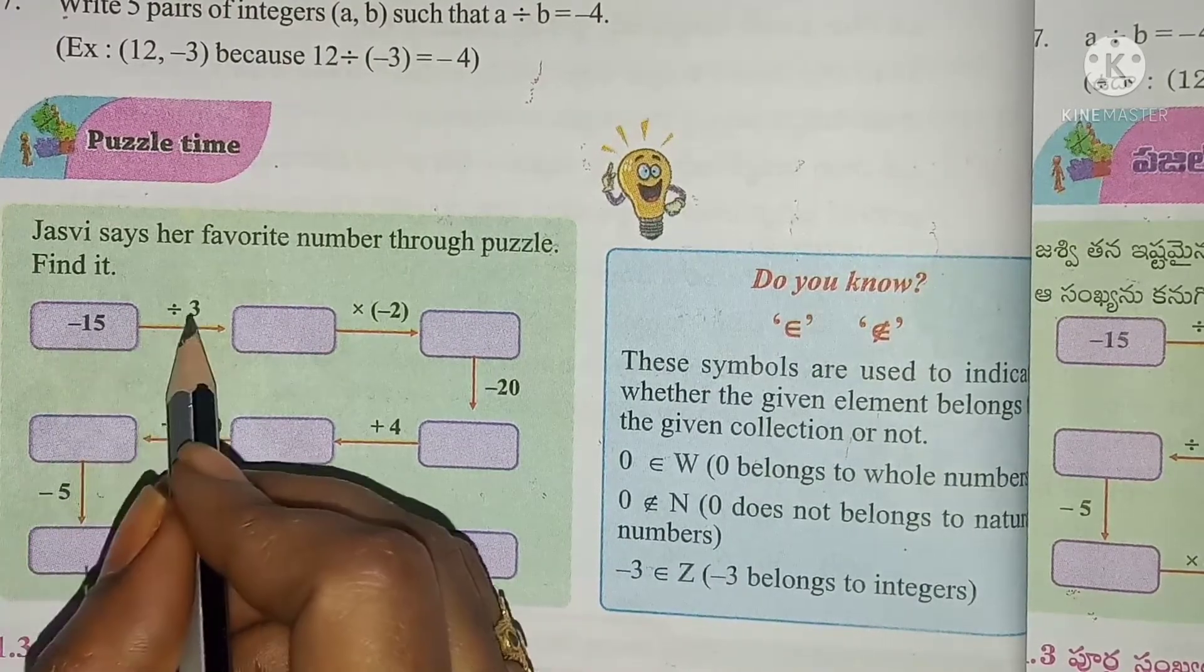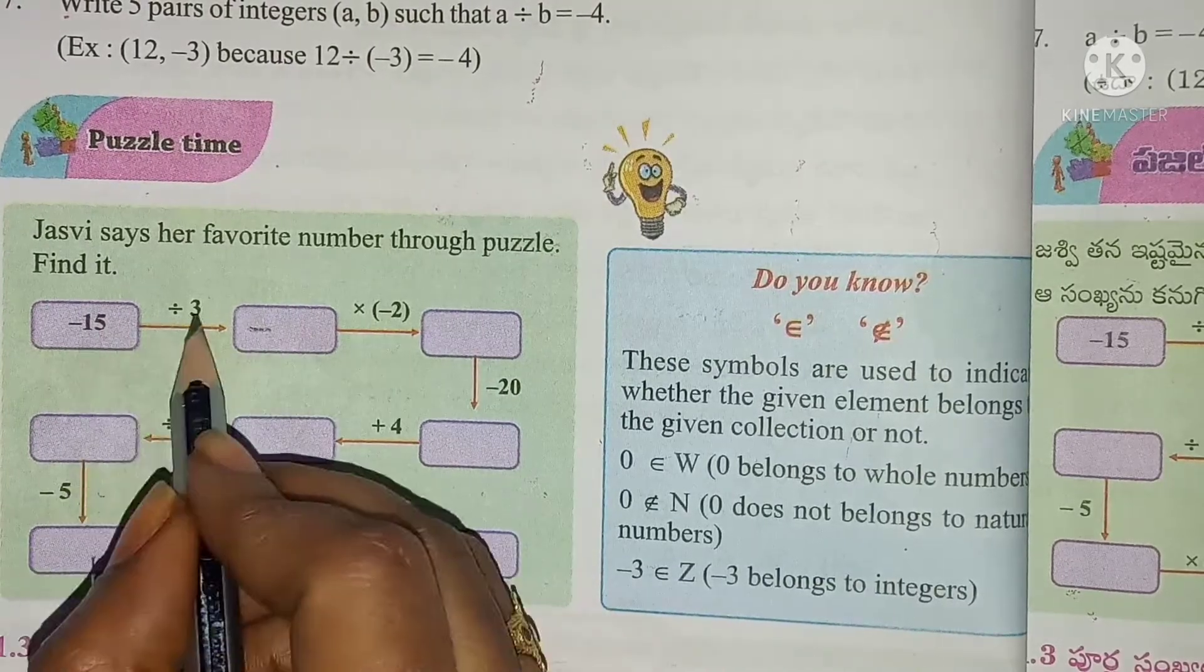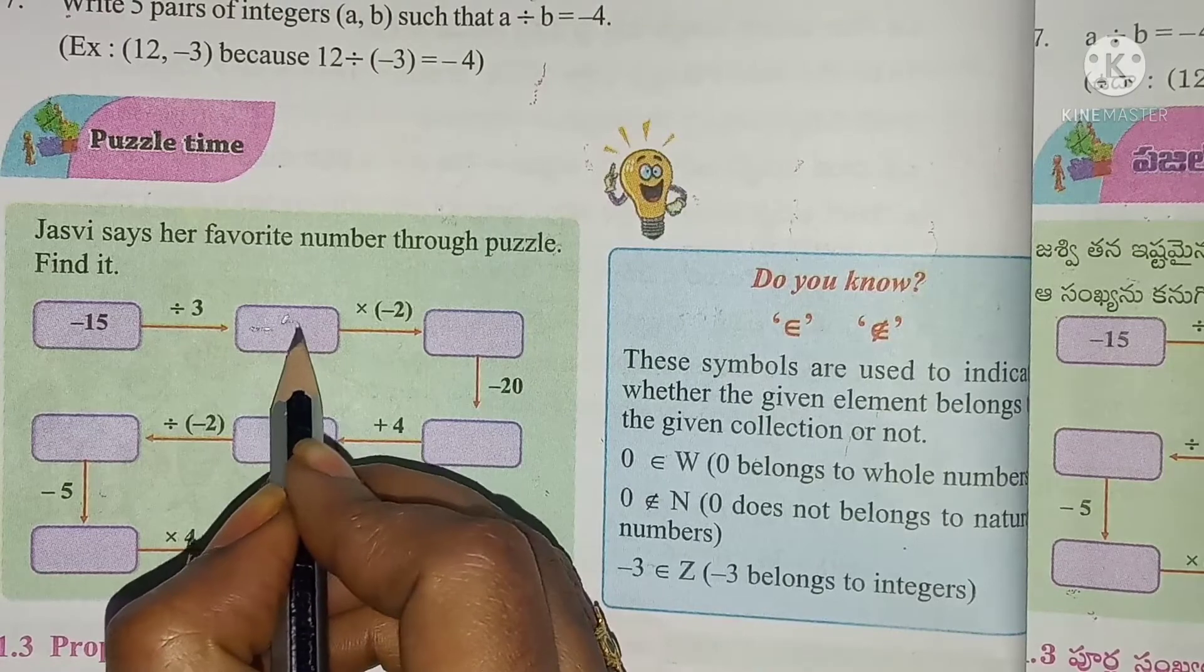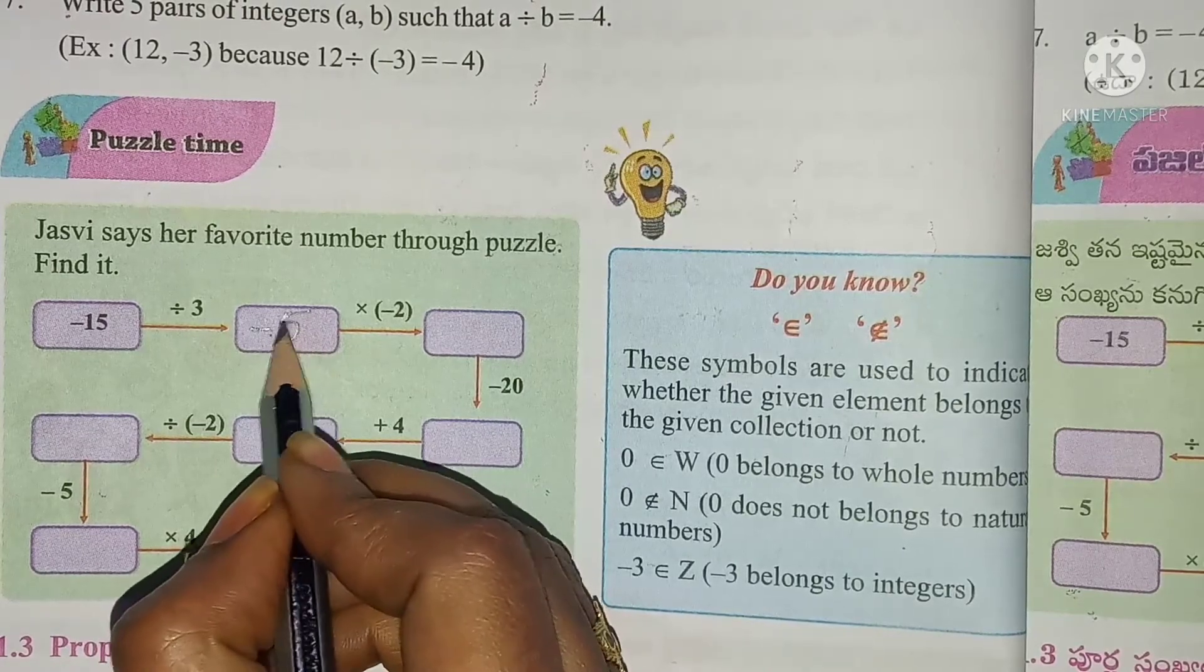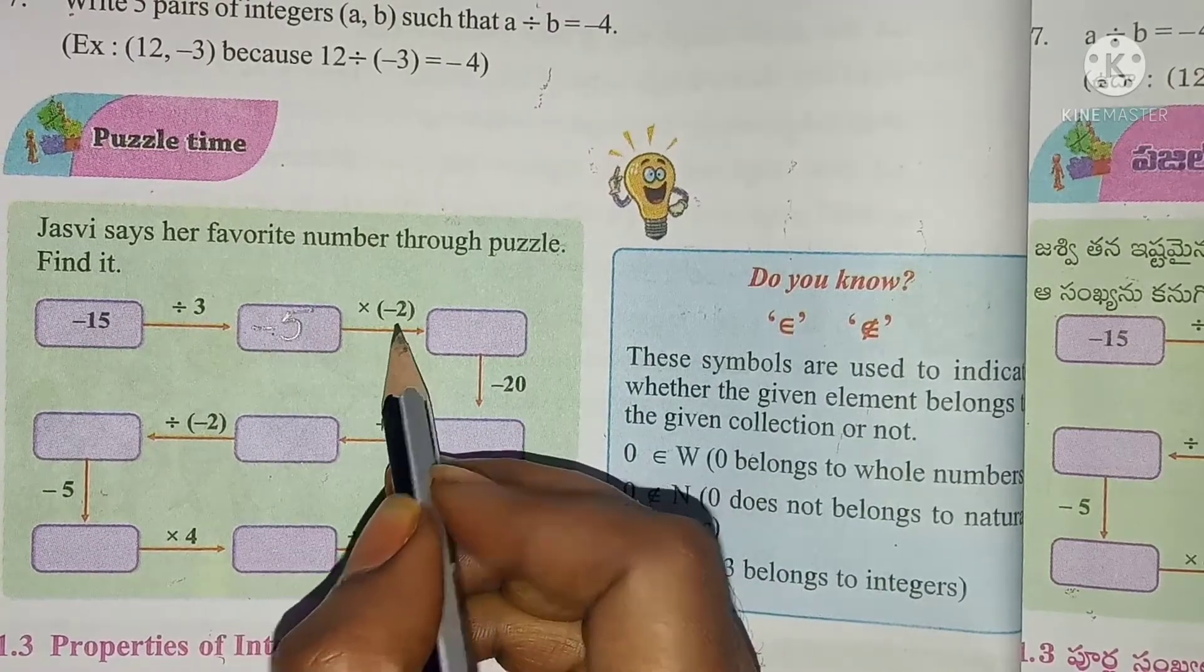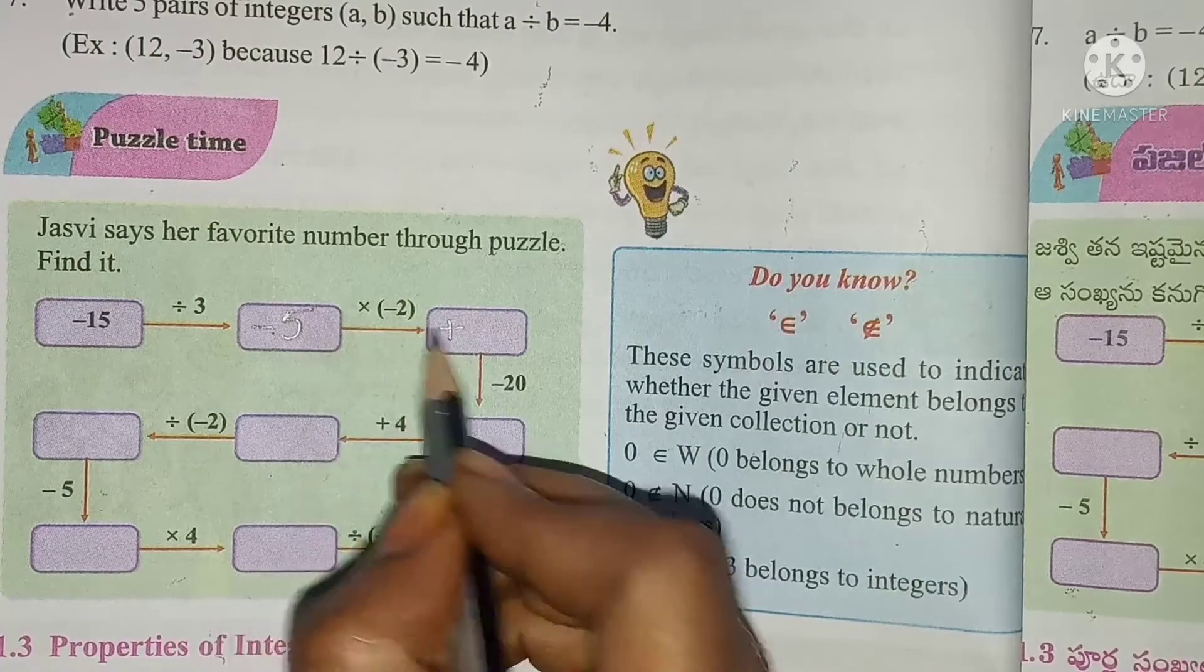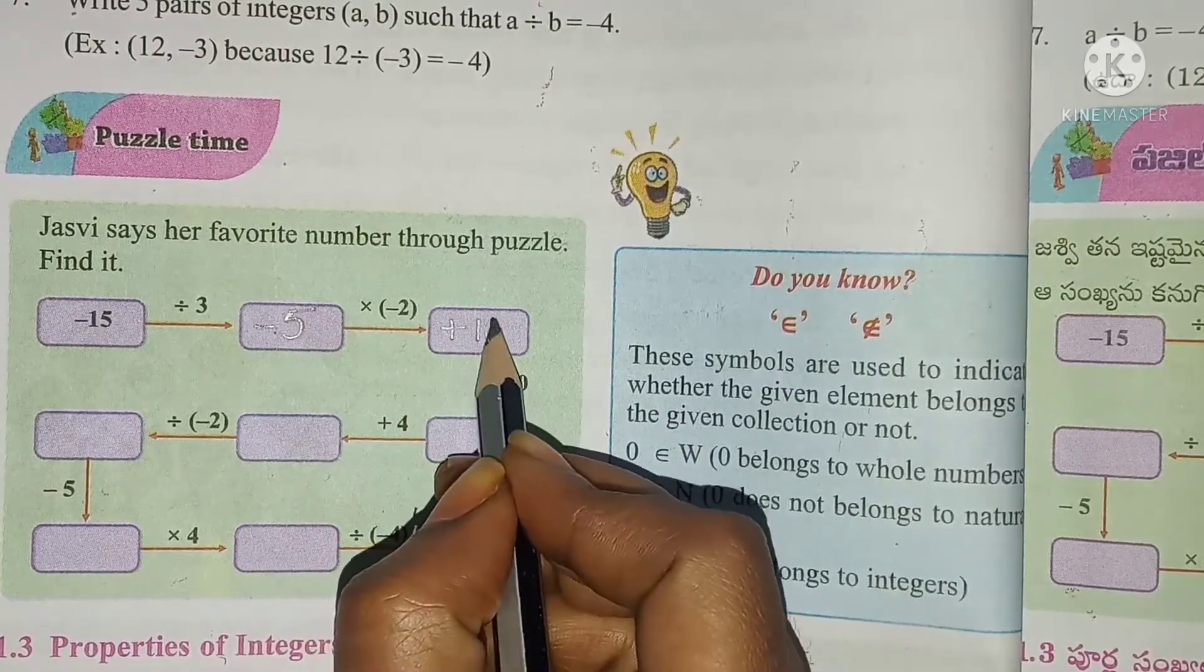Minus 15 divided by 3 equals minus 5. Then minus 5 times minus 2. Minus into minus is positive, 5 times 2 is 10.